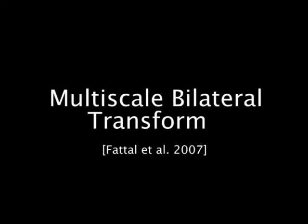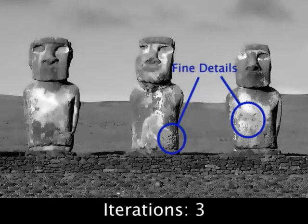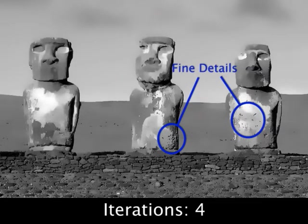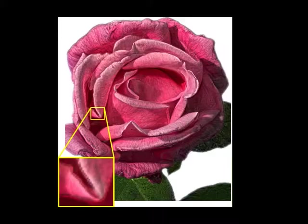The multiscale bilateral transform of Fattal et al. produces a more effective image coarsening, but note that some small-scale details remain even in the coarsest level. It also over-sharpens some of the edges, which can cause thin gradient reversal artifacts when details are strongly enhanced.